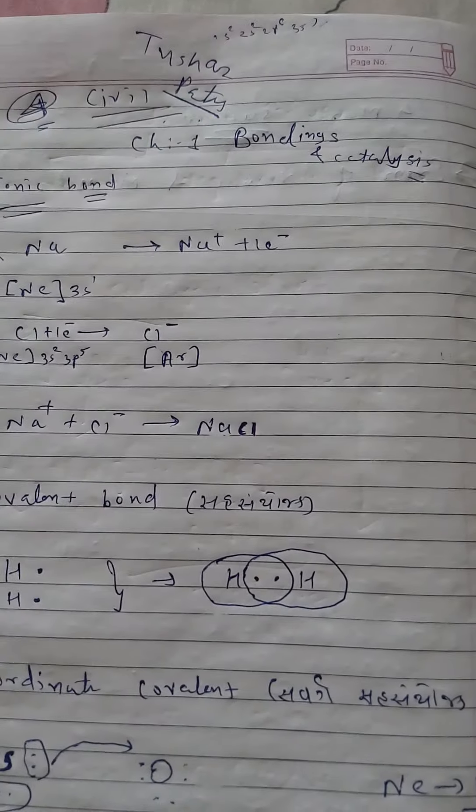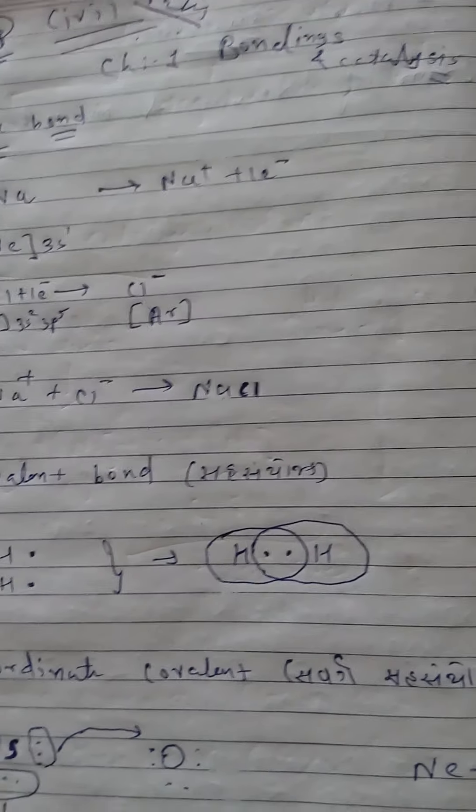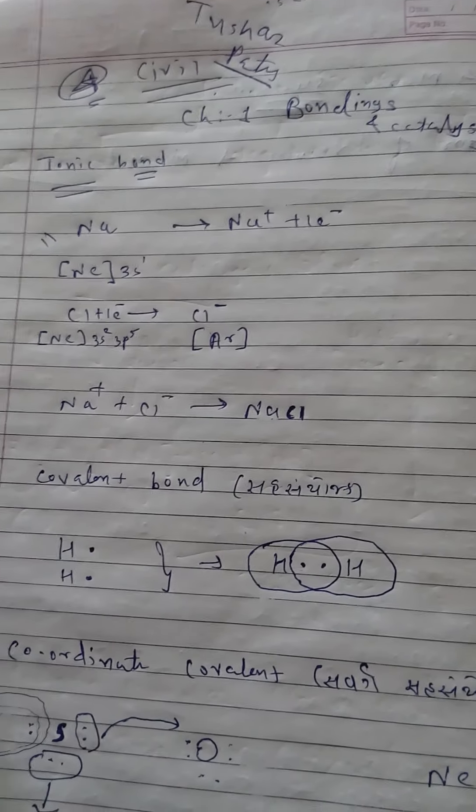The bond formed between two atoms or molecules by sharing of an equal electron is known as covalent bond.